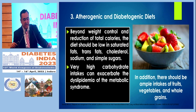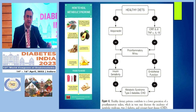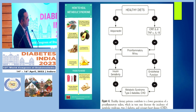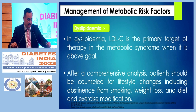There should be ample intake of fruits, vegetables, and whole grains. A healthy diet improves adiponectin levels, reduces inflammatory markers, and positively affects the pro-inflammatory milieu. It improves insulin sensitivity and thyroid function, and ultimately helps in reversal of Metabolic Syndrome, Type 2 Diabetes, and heart disease.